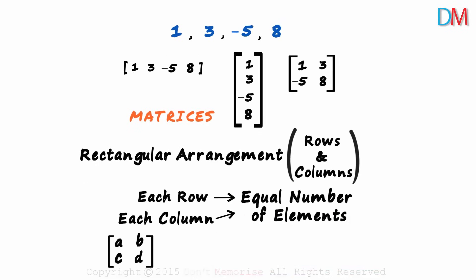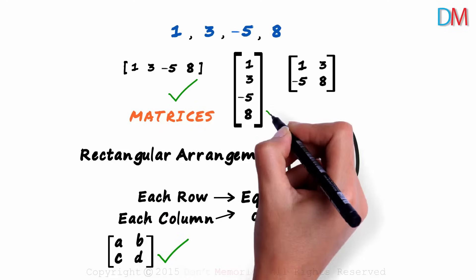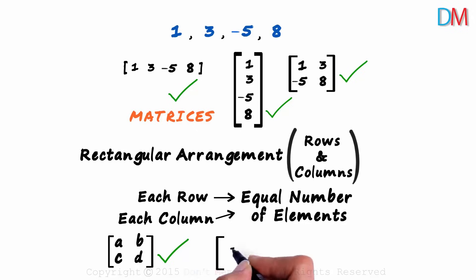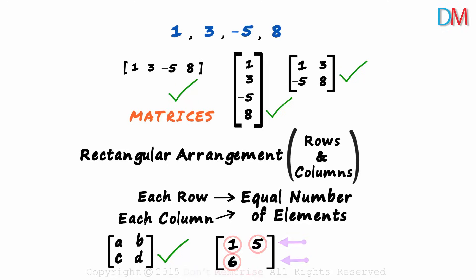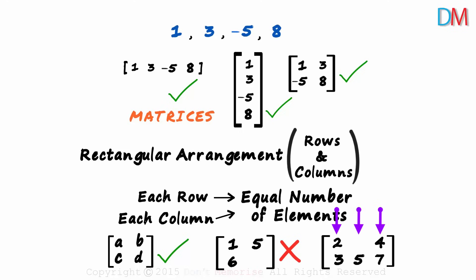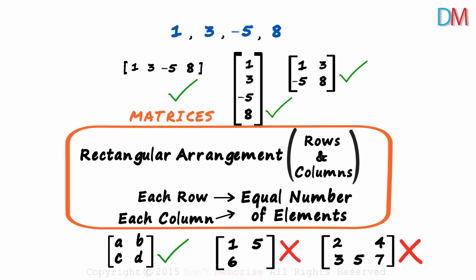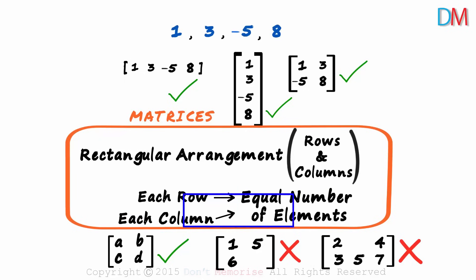So is this a matrix? Elements A and B in the first row and elements C and D in the second. It is a rectangular arrangement — each row has two elements and each column has two elements. It is a matrix. And these three are also matrices. What about this one with three elements? The first row has two elements but the second one just has one element, so it is not a matrix. What about this one with five elements? The number of elements in each of the columns is not the same — it's two, one, and two — and this as well is not a matrix. So this is the definition: a rectangular arrangement of rows and columns in which each row should have an equal number of elements and each column as well should have an equal number of elements.